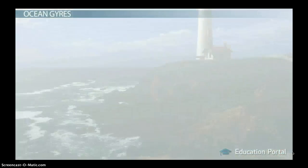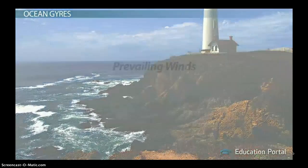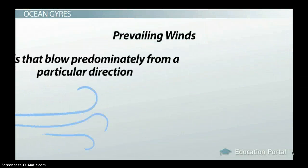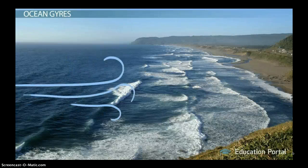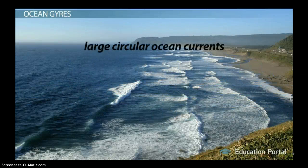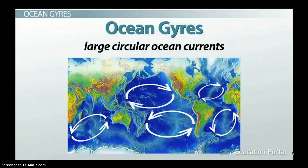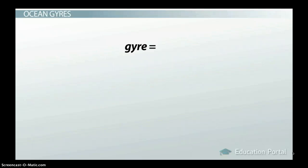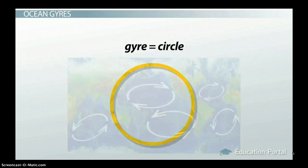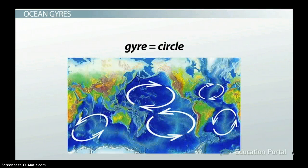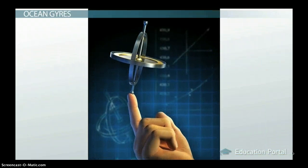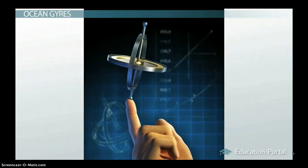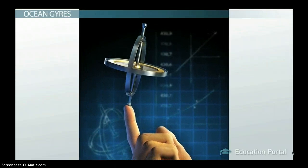Surface ocean currents are strongly influenced by the wind. Prevailing winds, which are winds that blow predominantly from a particular direction, flow across the ocean surface pushing the water in large circular ocean currents called ocean gyres. It might help you to recall this term if you remember that the word gyre is Latin for circle, which is the pattern these surface currents take. Or maybe you played with a gyroscope when you were a kid, which was a wheel-shaped science toy that could spin on its base in all kinds of crazy ways without falling off.